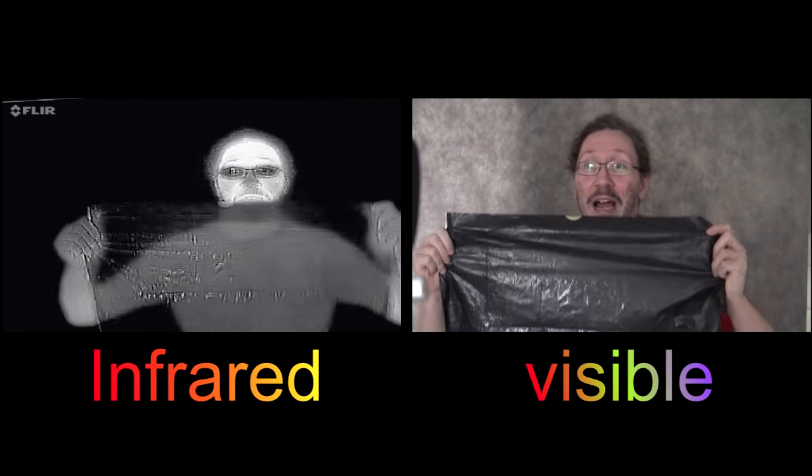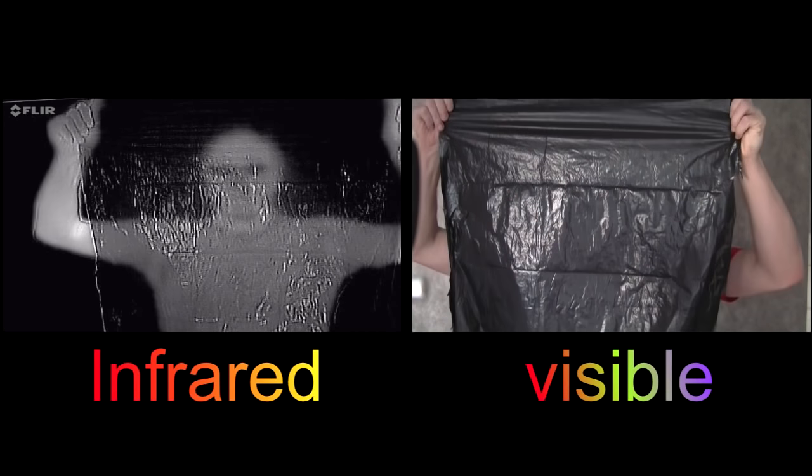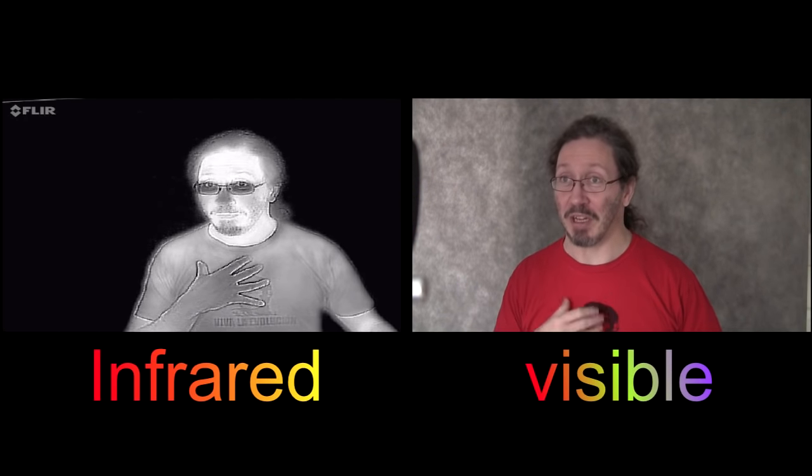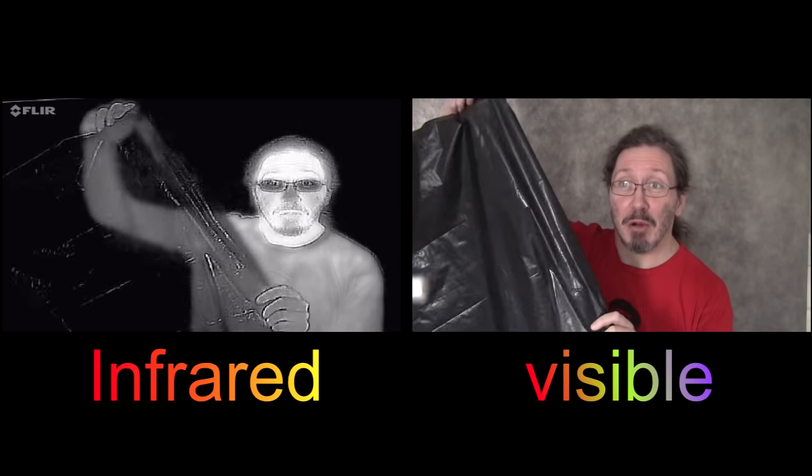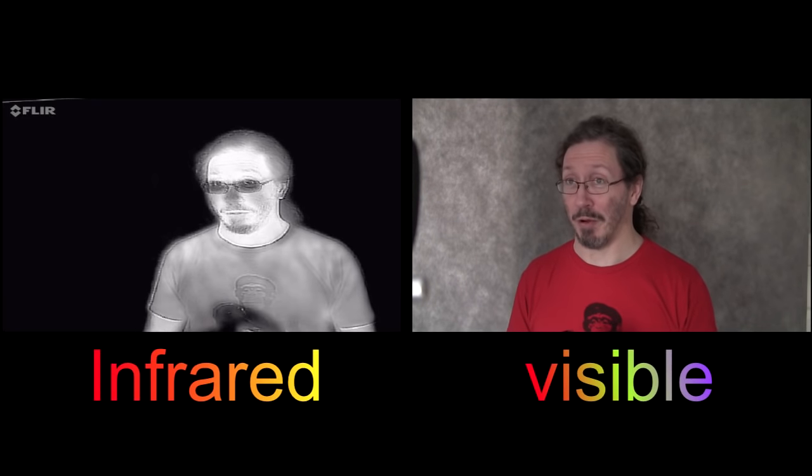However, this is polythene, and what you'll find is for the infrared, it's not quite so good at hiding my body heat. That is, the infrared will go through this black plastic, but visible light won't.